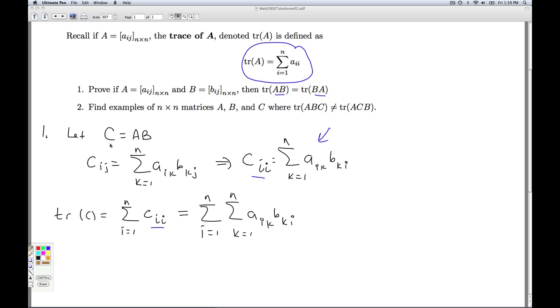Now I can proceed similarly, and I'm going to let D be the matrix B times A. And similarly, I can get a formula for the II entry of D. That's the sum K equals 1 to N, B_IK, A_KI.